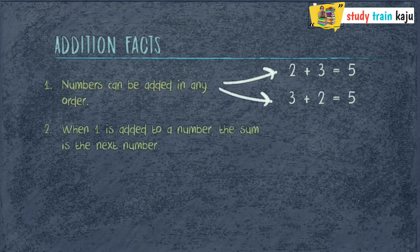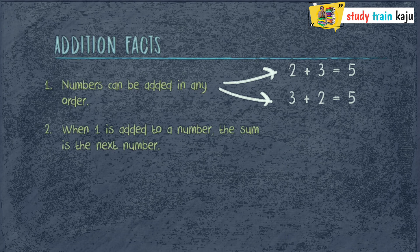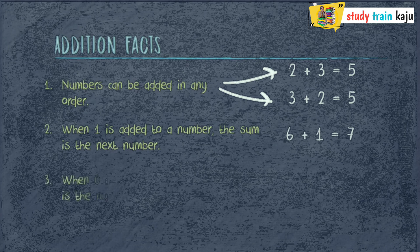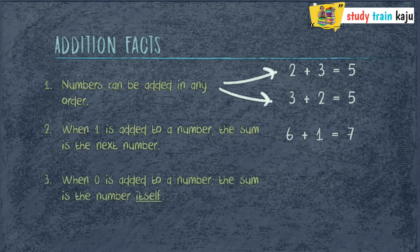The second fact is when 1 is added to a number, the sum is the next number. For example, 6 plus 1 equals 7. And the last fact is when 0 is added to a number, the sum is the number itself. For example, 8 plus 0 equals 8.